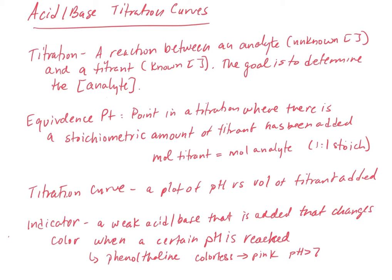That one-to-one mole relationship applies when we have a one-to-one stoichiometry, specifically for a monoprotic acid and a monoprotic base. When we have a polyprotic situation, we'll discuss that in a separate video. In that case it becomes an iteration where the polyprotic acid has more than one equivalence point. We'll also take a look at that in the lab.